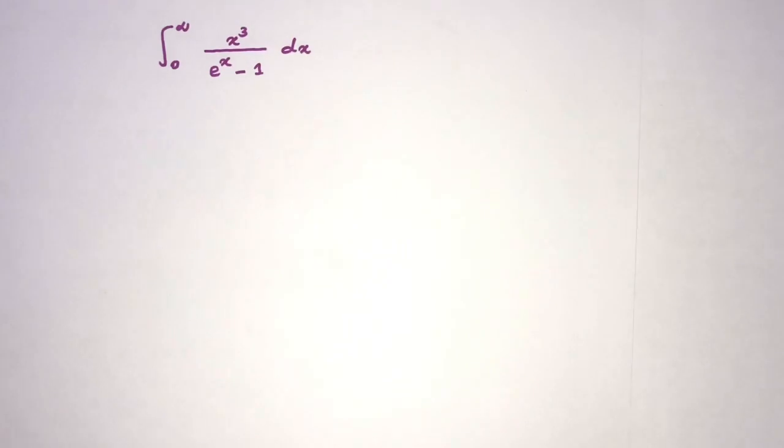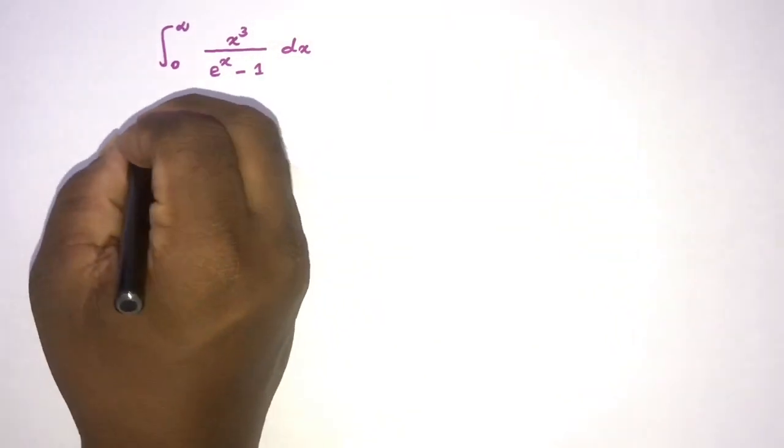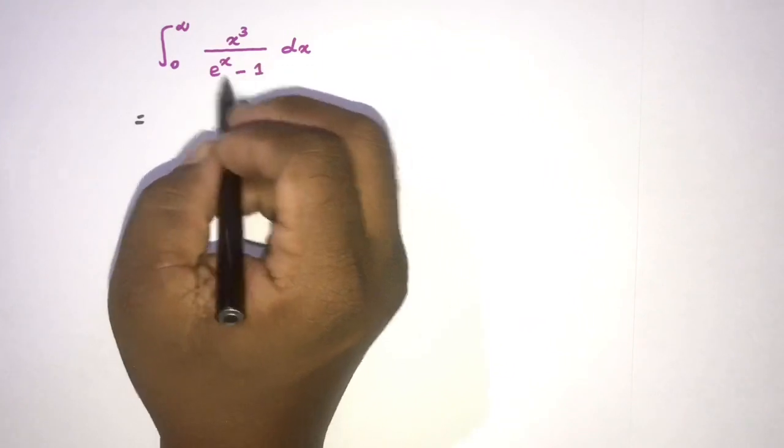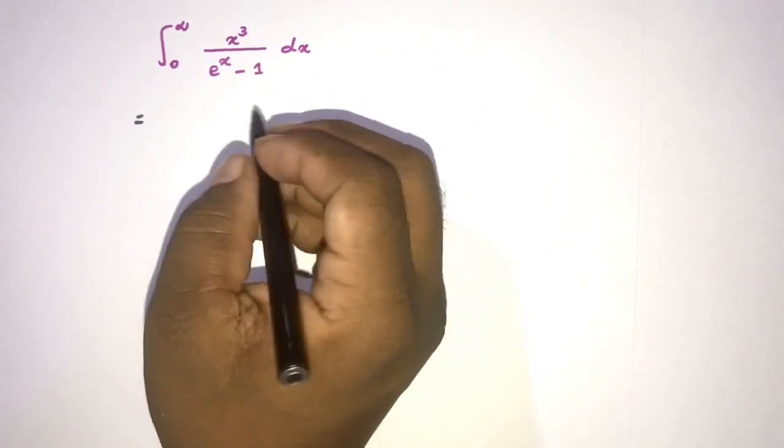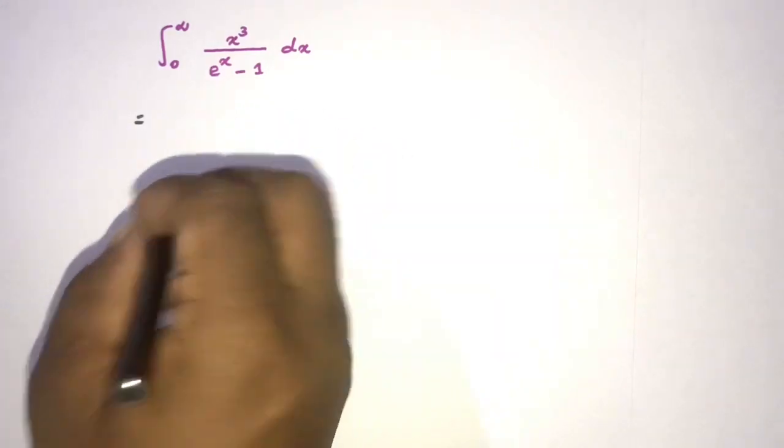How to begin? First of all, here we have 1 over e to the x minus 1. We can represent 1 over e to the x minus 1 as an infinite series, so we can write...